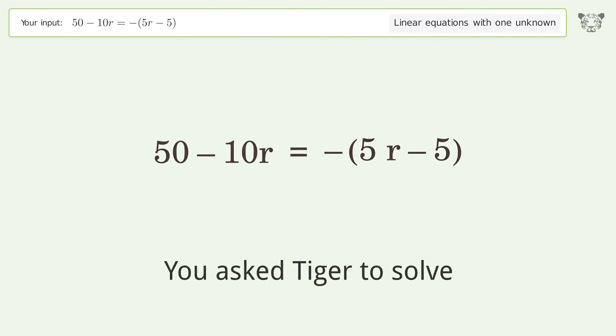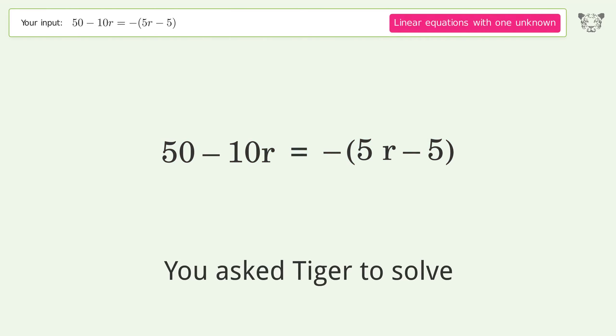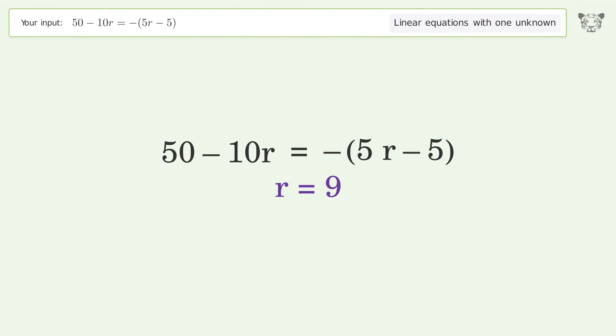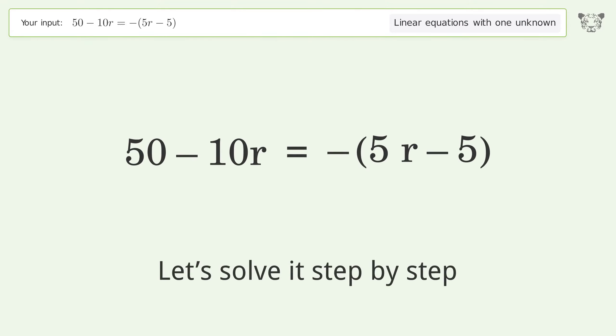You asked Tiger to solve. This deals with linear equations with one unknown. The final result is r equals 9. Let's solve it step by step.